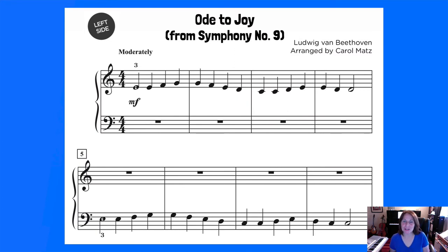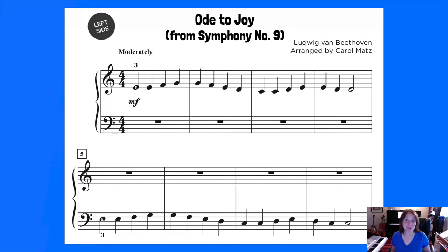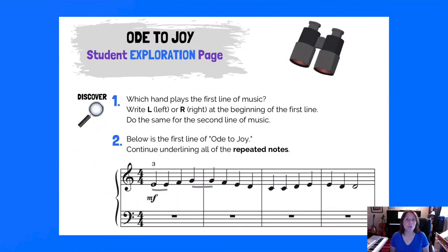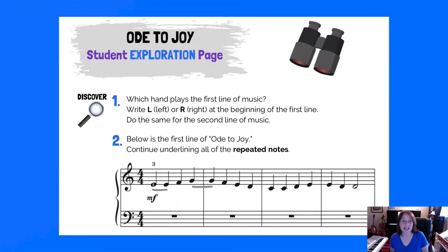The first piece is Beethoven's famous Ode to Joy from his Ninth Symphony. What I really love about teaching this piece to young students — besides exposing them to great music — is that it's a fantastic way to review steps, skips, and in particular repeated notes. Let's go ahead and take a look at one of the student exploration activities.